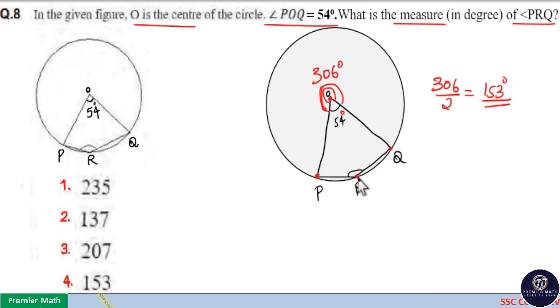Here, point R lies on the remaining part of the circle, which means angle PRQ is equal to 153 degrees. That is, arc PQ can create half of 306 with point R. So angle PRQ equals 153 degrees. Option 4 is your answer.